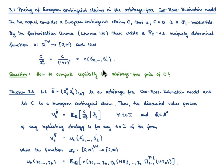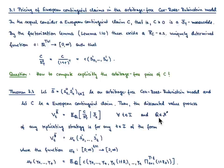Why is that the case? That is the statement of the following theorem. I consider an arbitrage-free Cox-Ross-Rubinstein model, which I denote by S^1, and a European contingent claim c. Then the discounted value process for any replicating trading strategy, denoted V̄^h(t), is nothing else but the expected value under Q of the discounted European contingent claim given F_t, for any t in the index set and any Q in the set of equivalent martingale measures.